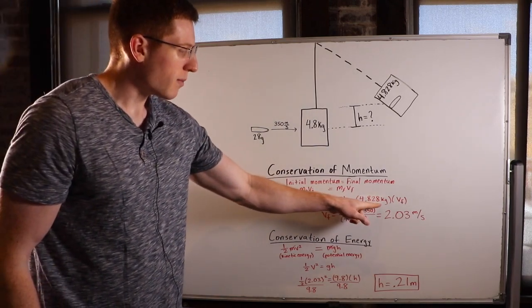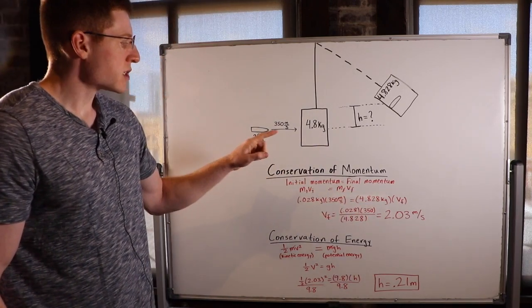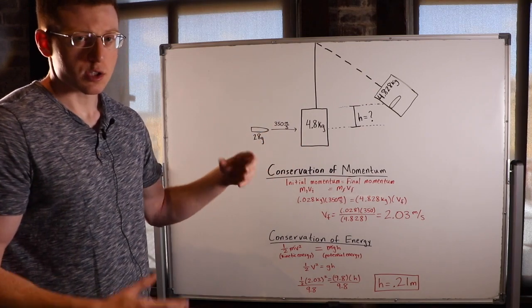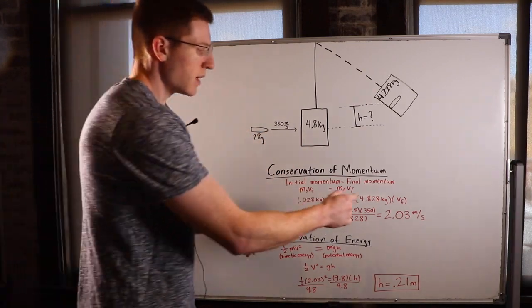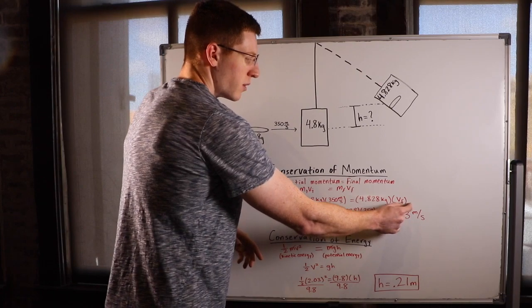And then that's going to equal our final mass, which was the mass of the bullet plus the mass of the block. Because remember, they got lodged together and then we can solve for its final velocity.